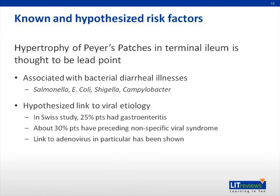There are multiple known and hypothesized risk factors for intussusception. In most idiopathic cases, hypertrophied Peyer's patches in the terminal ileum are thought to be the lead point. There is a known link to bacterial diarrheal illnesses and proposed links to various viral etiologies, adenovirus in particular. Other studies have shown that about 25 to 30% of children have had a preceding viral gastroenteritis or viral illness.